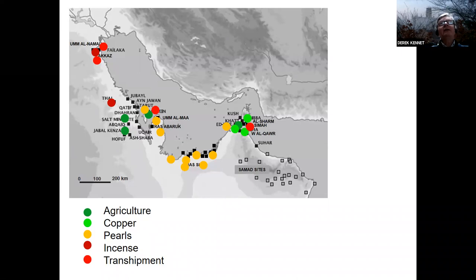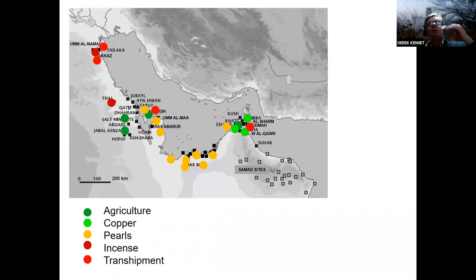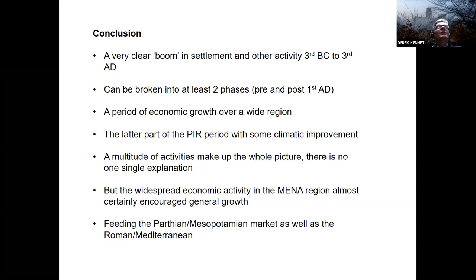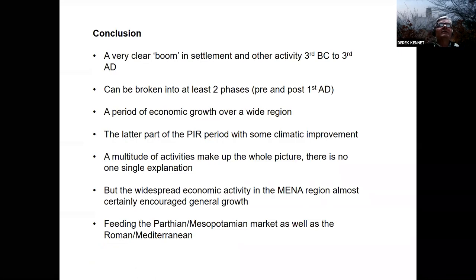So when we try to make a colourful map at the end, it suggests that this single boom I described is most likely a series of different levels and types of activity intermeshing as a complex network — agricultural activity, almost certainly pearling activity in some parts, possibly a little bit of copper, certainly some incense in certain areas, and some transshipment activity as well. That's just an attempt to paint a new picture — we need to go a lot further, and I'm not claiming this is the end at all. I just think we need to start thinking in more detail about how and what was going on in Eastern Arabia during this really remarkable phenomenon. The conclusions are: a very clear boom in settlement and other activity during this period can be broken into two clear phases.